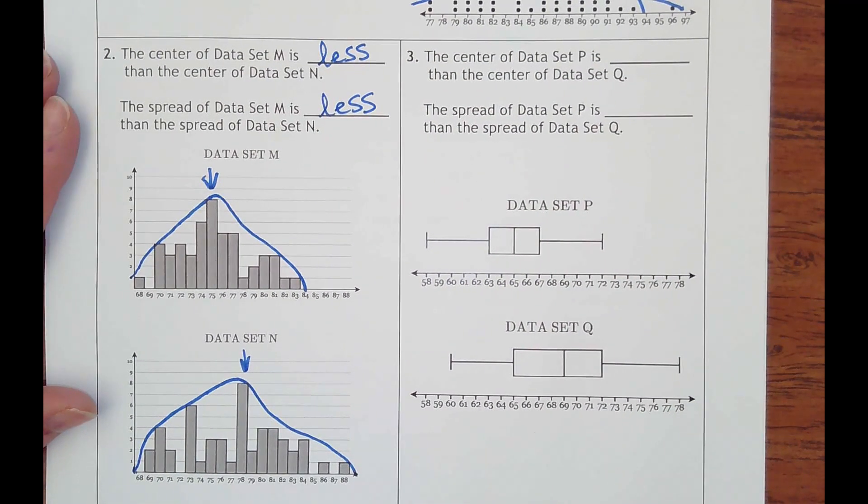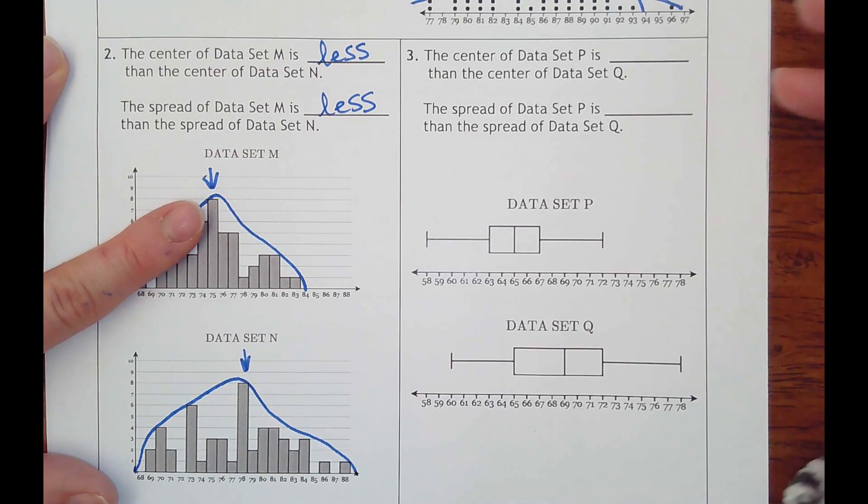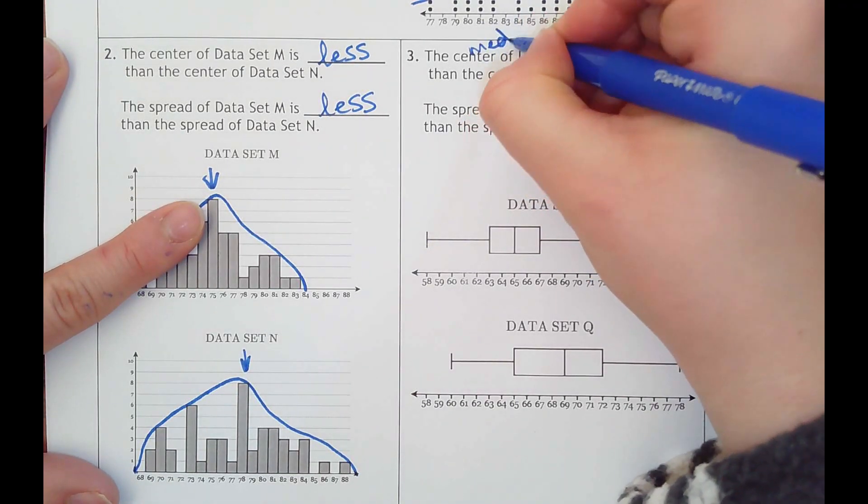And so the last one is a box and whisker plot. The center, this is the easiest one to tell, the center is literally the median, the middle line.